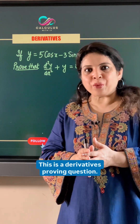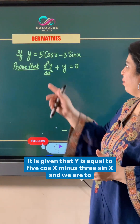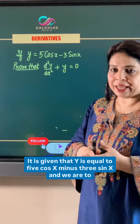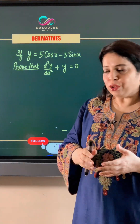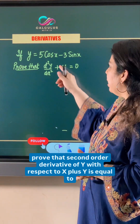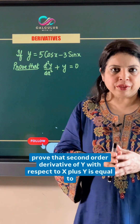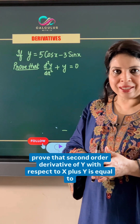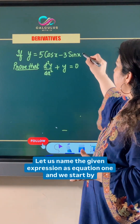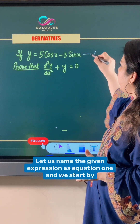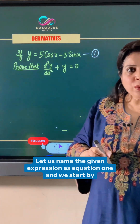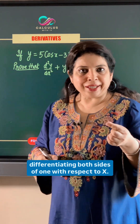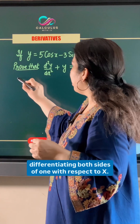This is a derivatives proving question. It is given that y is equal to 5 cos x minus 3 sin x, and we are to prove that the second order derivative of y with respect to x plus y is equal to 0. Let us name the given expression as equation 1, and we start by differentiating both sides of equation 1 with respect to x.